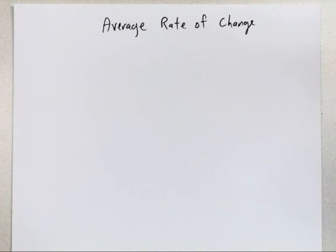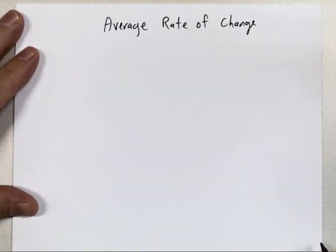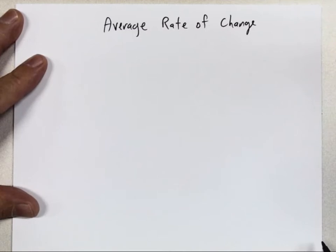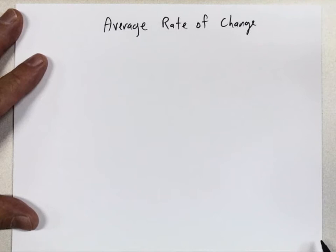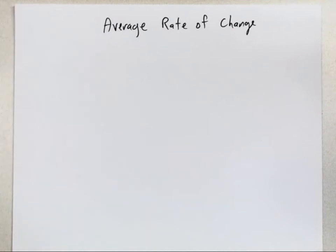The next topic in Module 5 is something called the Average Rate of Change, and that's where you have a function or an equation that is changing, and you want to see how it is changing. I think the easiest thing to do is just to do an example, and in a minute I'm going to show you some information from the textbook. Let me describe the problem.